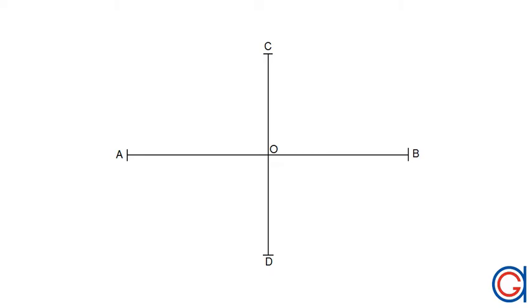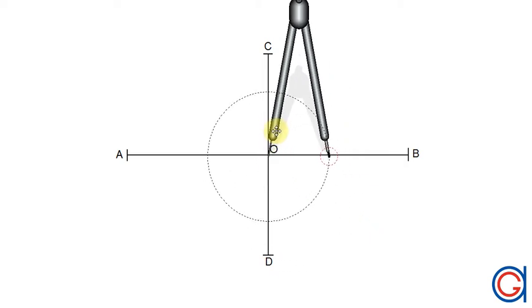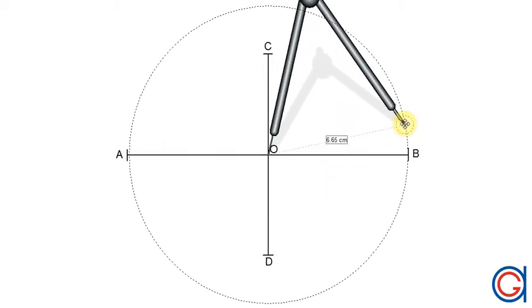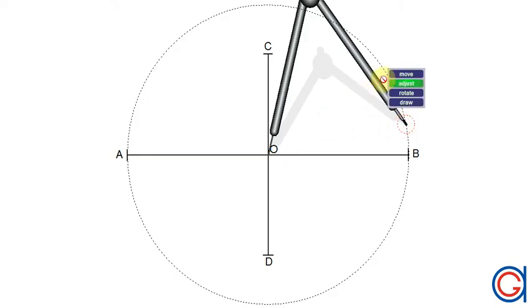So here we can see our two axes AB and CD. The first step: with our compass setting it in the midpoint zero and with radius zero B or zero A, we are going to draw our first circle.